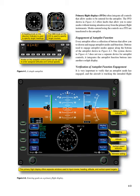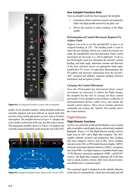Engagement of Autopilot Function. Every autopilot offers a collection of buttons that allow you to choose and engage autopilot modes and functions. The system shown in Figure 4-3 integrates the autopilot function buttons into another cockpit display. It is very important to verify that an autopilot mode has engaged and the aircraft is tracking the intended flight. Every autopilot displays which autopilot modes are currently engaged, and most indicate an armed mode that activates when certain parameters are met, such as localizer interception. The integrated autopilot shown in Figure 4-4 displays the currently engaged autopilot mode along the top of the PFD.